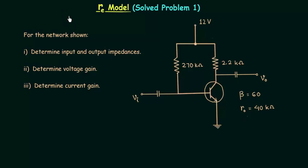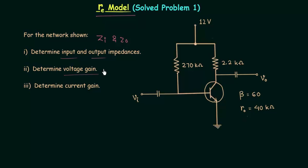We have sufficient knowledge of the RE model and in this lecture we will solve a numerical problem based on the RE model. In this problem we need to determine the input and output impedances, meaning we need to find ZI and ZO. After this we need to determine the voltage gain AV, and the final part is calculation of current gain AI.